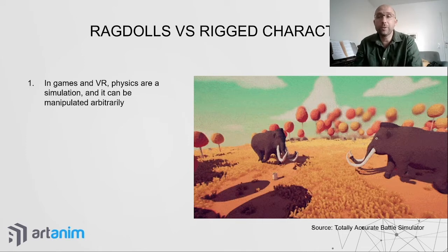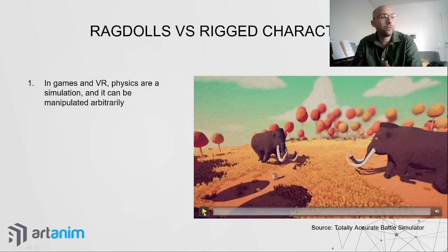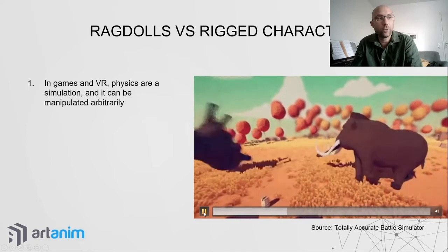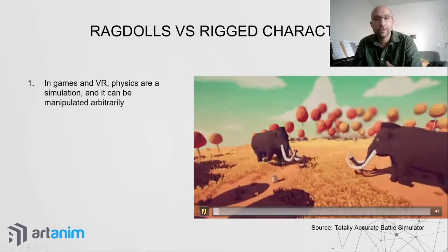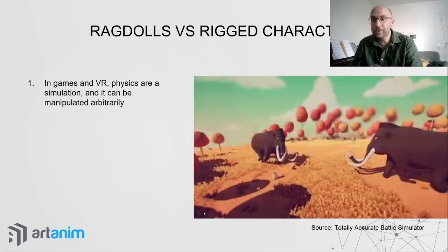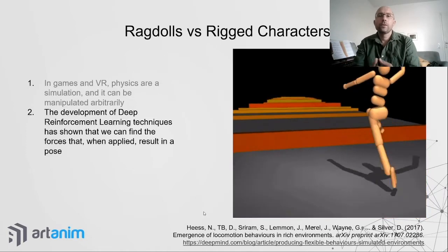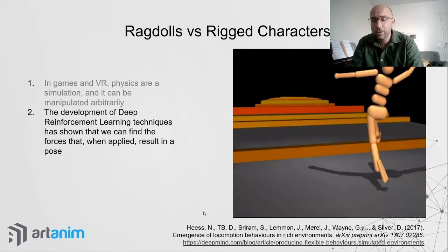In games and VR, physics is a simulation that you can manipulate arbitrarily. Here's an example from the game Totally Accurate Battle Simulator where a mammoth flies after a collision — clearly not possible in real life, but the programmer has manipulated masses and forces so this can happen. Physics-based simulation gives you this power.